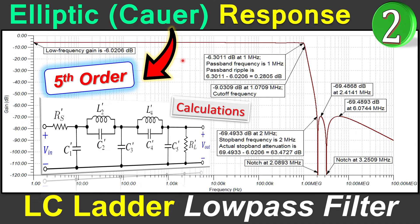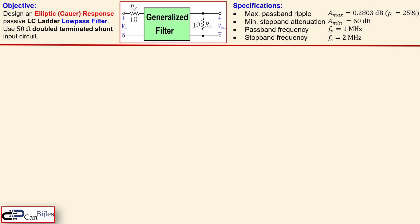Of course we will work out everything step by step in our calculations and also verify these in SPICE simulations. So let's look at our objective. We like to design an elliptic response filter, must be a passive LC ladder low-pass filter configuration, and we need to use a 50 ohm double terminated shunt input circuit.